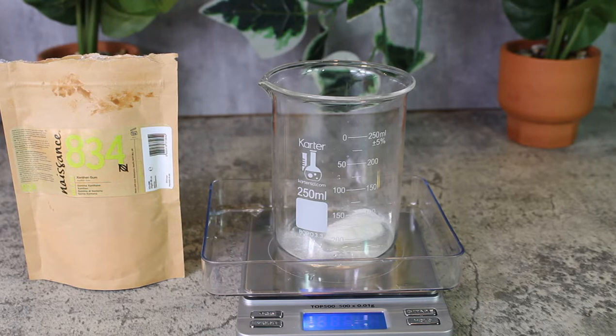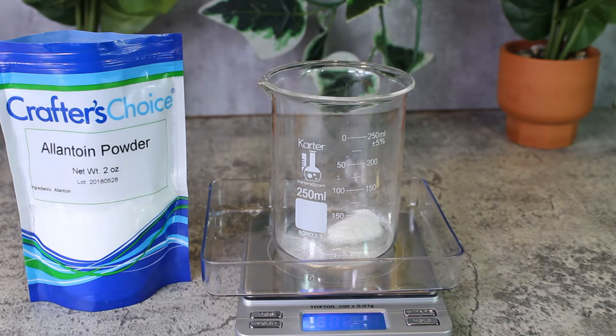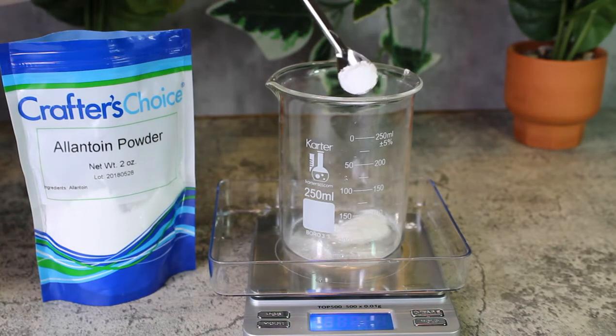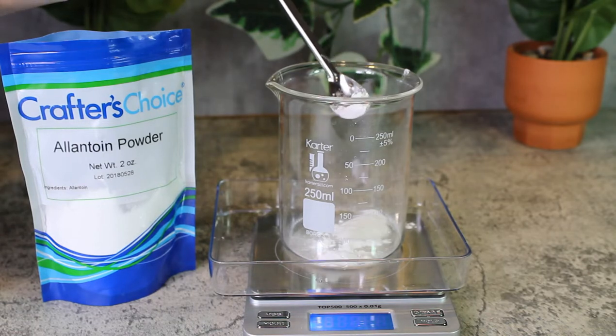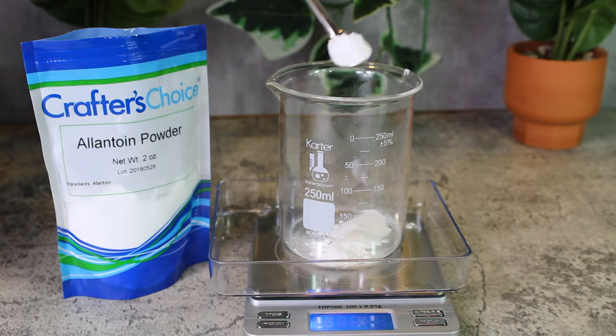Next I'm adding allantoin. You guys are going to see in the formula that I put it in Phase A and it's definitely—I would definitely suggest you put it into the water then adding it with the glycerin and the xanthan gum because it's a total—yeah, you're gonna see towards the end.